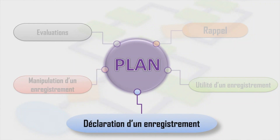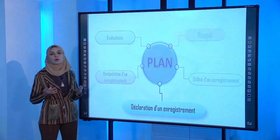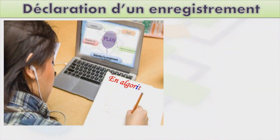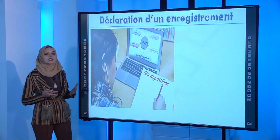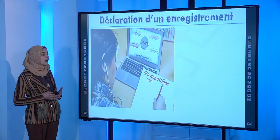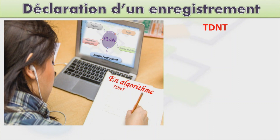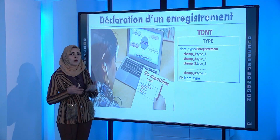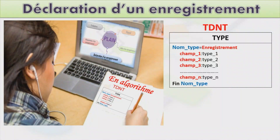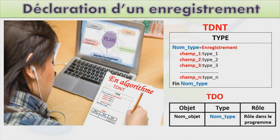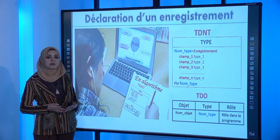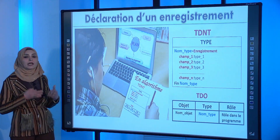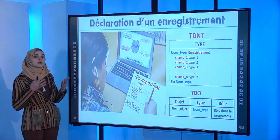Pour déclarer un enregistrement en algorithme, on utilise le tableau de déclaration des nouveaux types (TDNT). On écrit : NomType = enregistrement, on déclare les champs avec leur type, puis fin NomType. Dans le tableau de déclaration des objets, on déclare le nom d'objet avec son type (le NomType défini au TDNT), en précisant son rôle dans le programme.